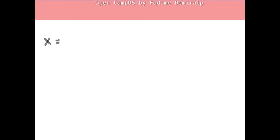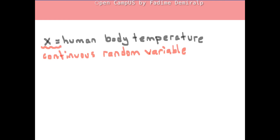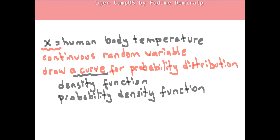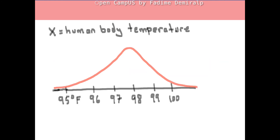How about the probability distribution of a continuous random variable? Suppose X represents the continuous random variable which is human body temperature. Since X is a continuous random variable, we cannot make a table to list all possible outcomes with corresponding probabilities, but we can draw a curve representing this relationship. A probability distribution for a continuous random variable is given by a curve called a density curve. The function which defines this curve is called the density function, or probability density function, or PDF, or simply density.